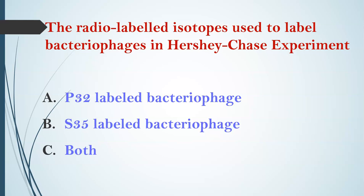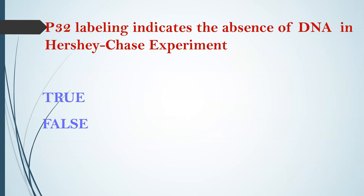Next question: What are the radio-labeled isotopes used to label bacteriophages in the Hershey and Chase experiment? Options: A) P32 labeled bacteriophages, B) S35, C) Both. The answer is both P32 and S35 labeled isotopes are used.